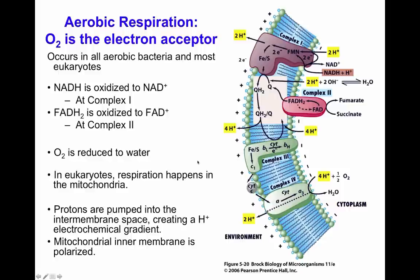In eukaryotic cells, this process happens exclusively in the mitochondria. Protons are pumped by complex one, complex three, and complex four, generating a proton motive force — the same as a proton electrochemical gradient.